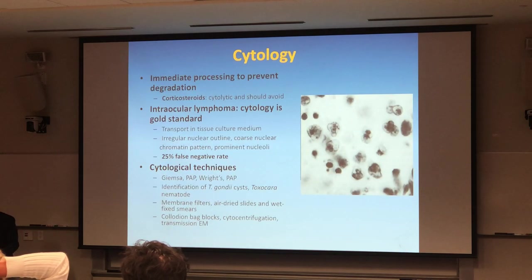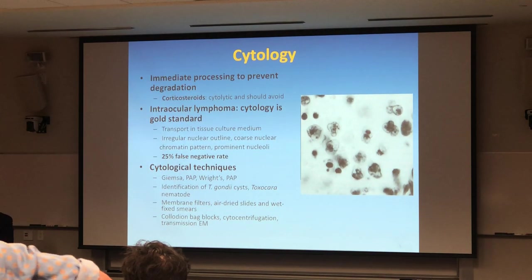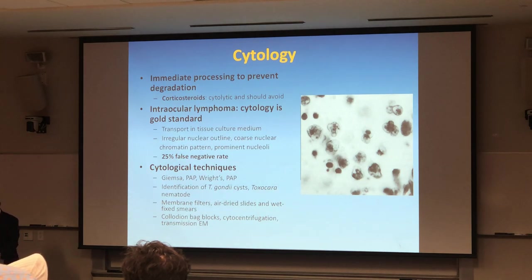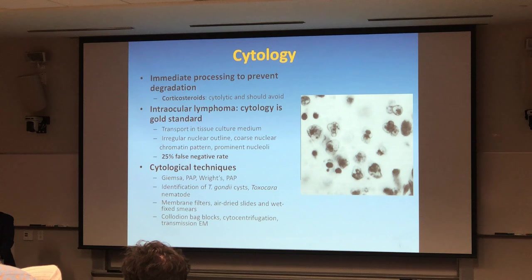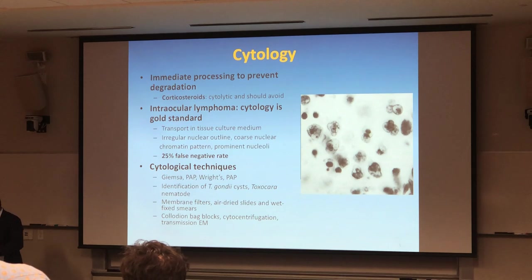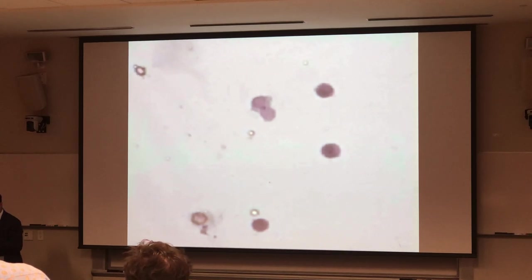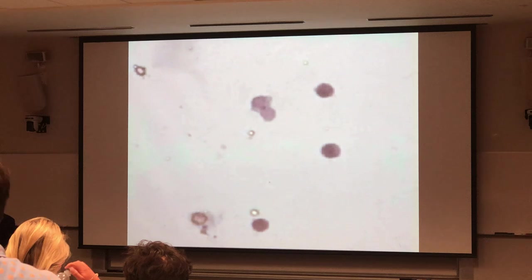You also send the vitreous washings, but those are diluted in preservatives. The undiluted vitreous you send to rule out microbiology and infection. Then you want to send for cytopathology and also look at IL-6 and IL-10. For the diluted vitreous you look at different additional aspects. Regarding cytology — blue staining is bad; those big blue-staining cells in the middle are bad cells. Cytology is the gold standard for this.